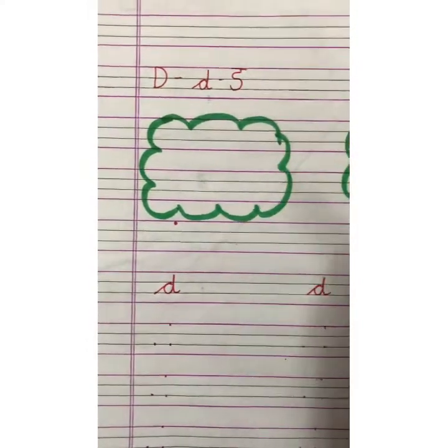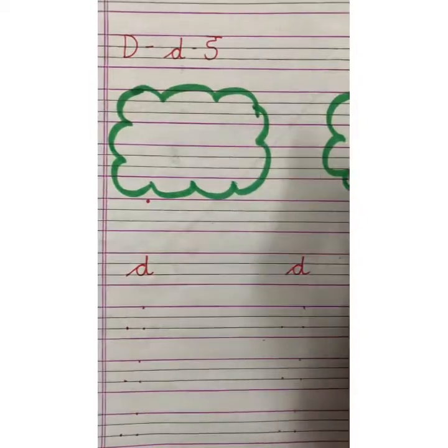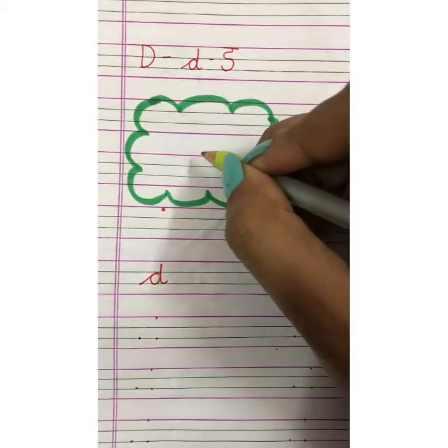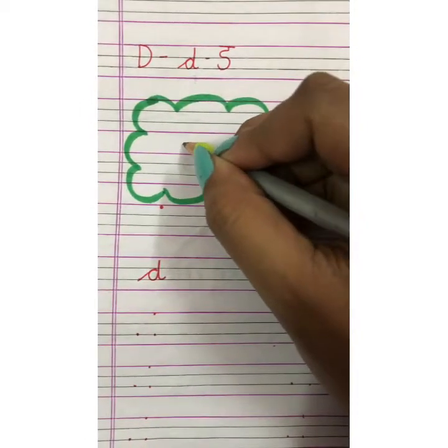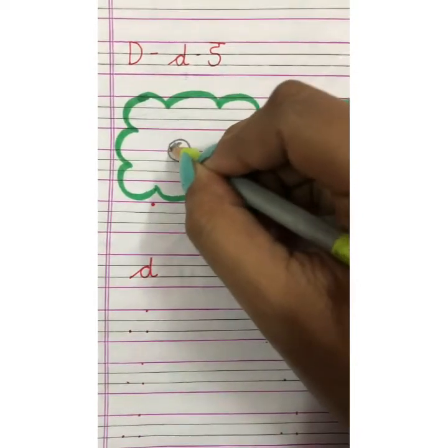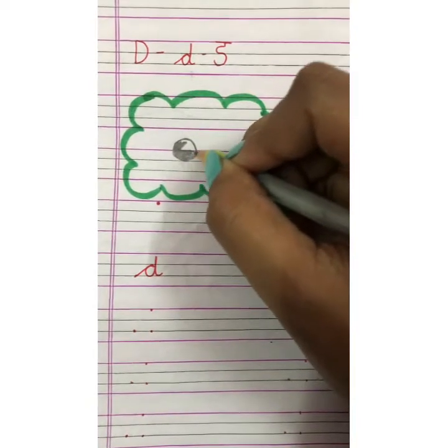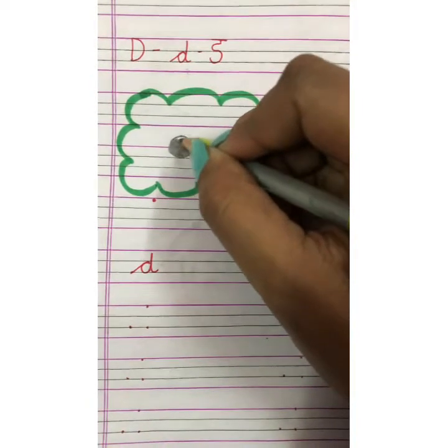Now, we will draw pictures related to letter D. So, D for dot. Let's draw dot first. Make a circle and color it with pencil only. Like this. This is D, duh, dot.